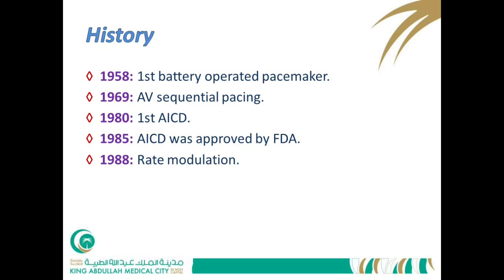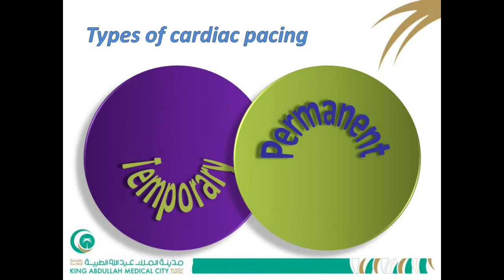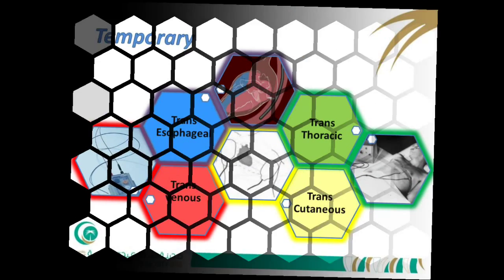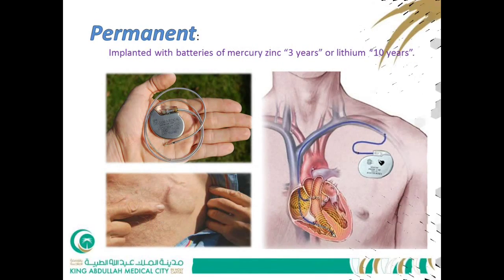Pacemakers are generally divided into temporary or permanent. Temporary types include transesophageal, transvenous, and transthoracic or transcutaneous. Permanent pacemakers — the main concern of today's lecture — are implanted subcutaneously mainly in the left or right infraclavicular regions, with batteries giving a lifespan of approximately three to ten years depending on battery type.